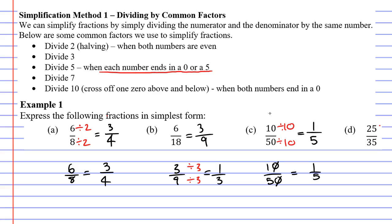If I divide 25 by 5, and I divide 35 by 5, what am I going to get? 25 divide 5 is 5, and 35 divide 5 is 7, and 5 over 7 is a fraction in simplest form.